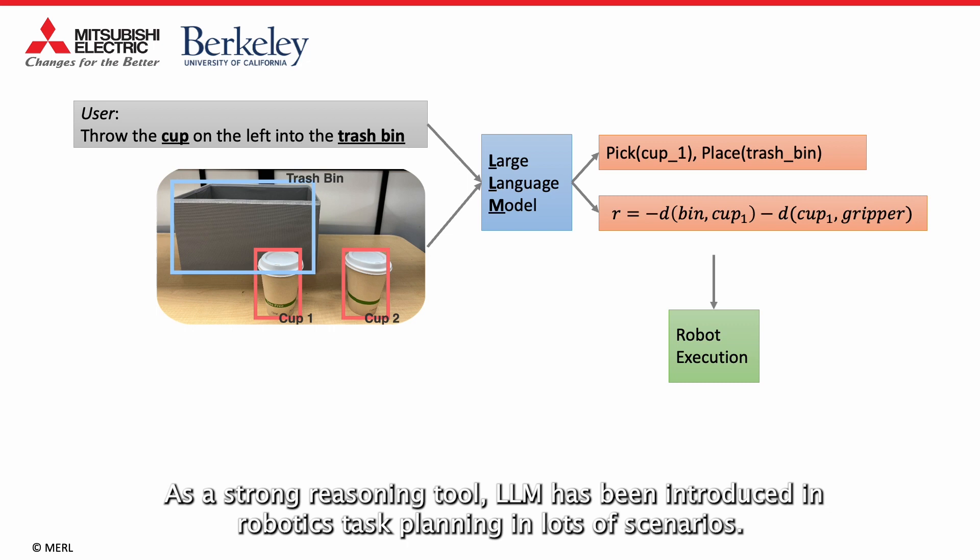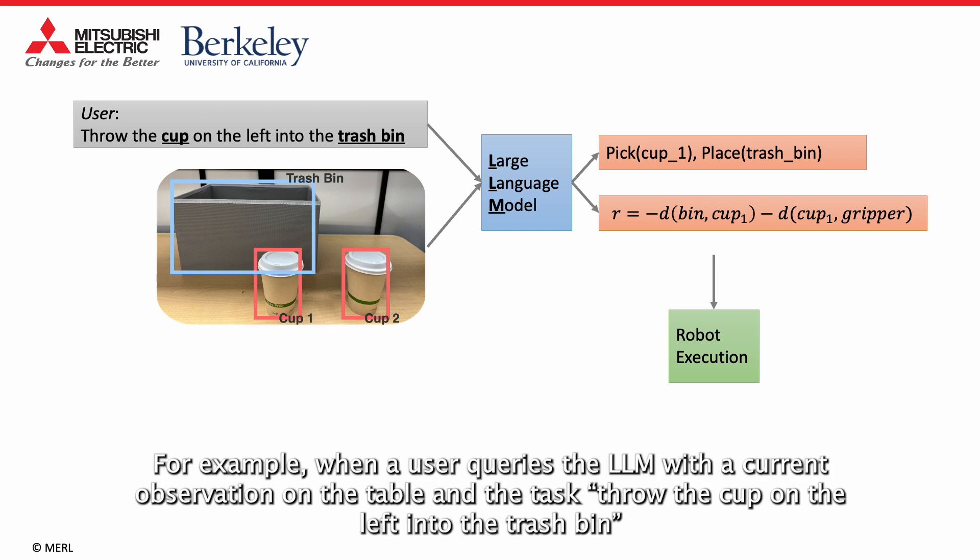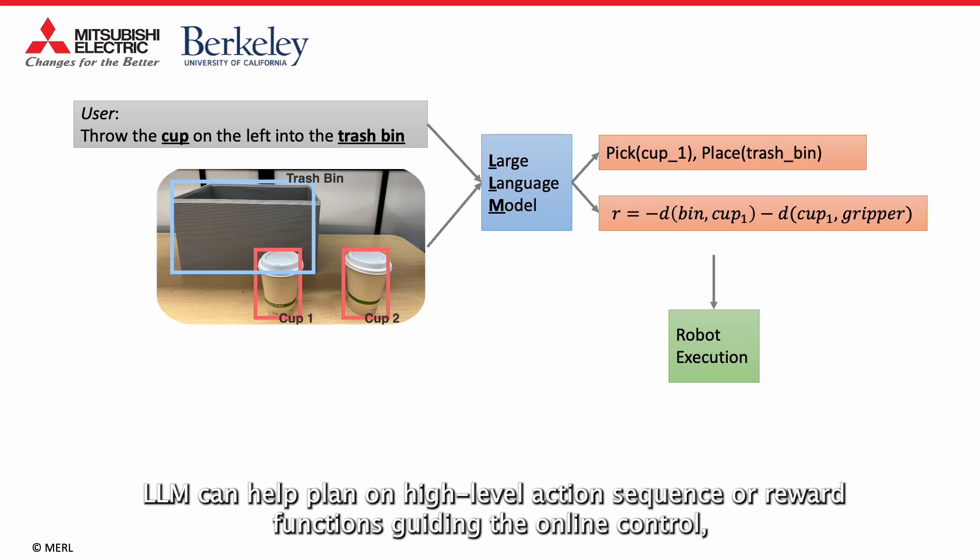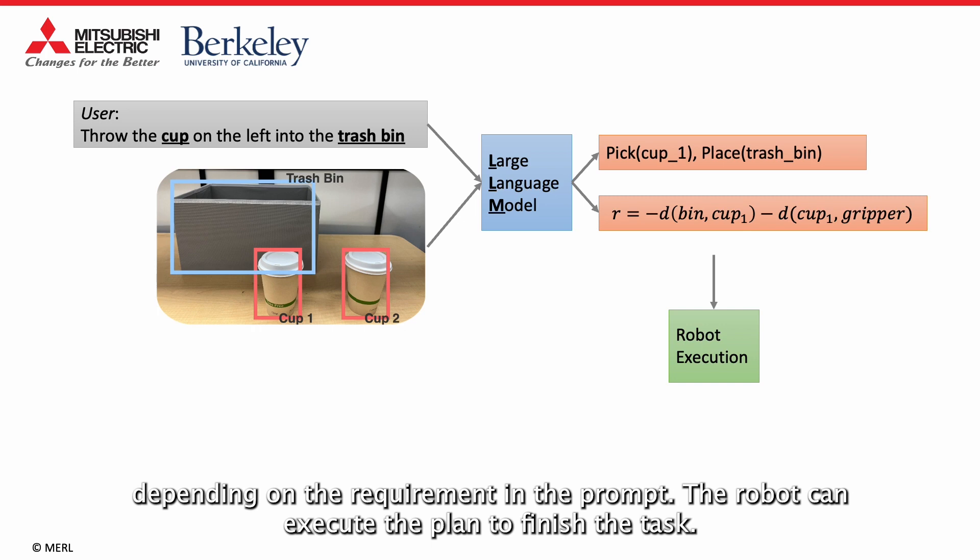LLM and strong reasoning tools have been introduced in robotics task planning in lots of scenarios. For example, when a user queries LLM with a current observation on table and task, throws a cup on the left into a trash bin, LLM can help plan high-level action sequences or reward functions guiding the online control, depending on the requirement in the prompt. The robot can execute the plan to finish the task.